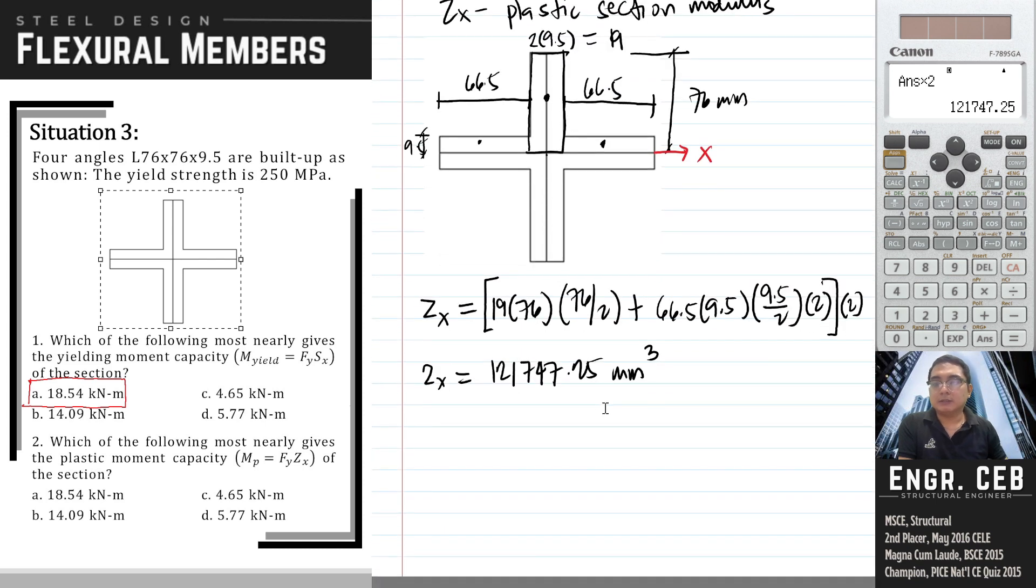Now we can compute the plastic moment. That is simply Fy times Zx, that is equal to 250 times 121,747.25.